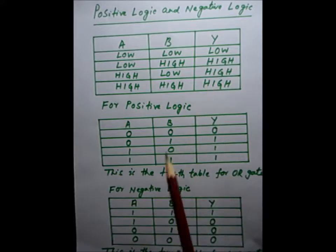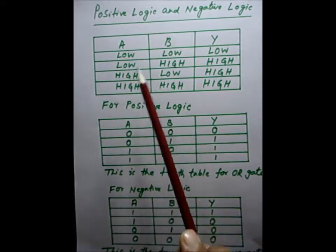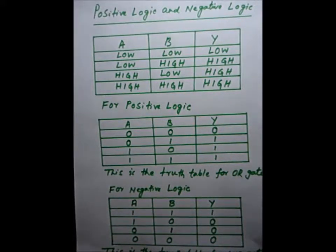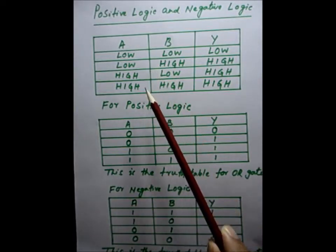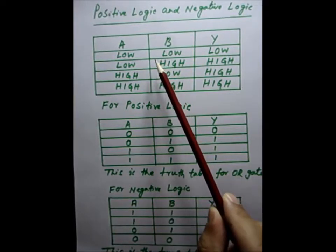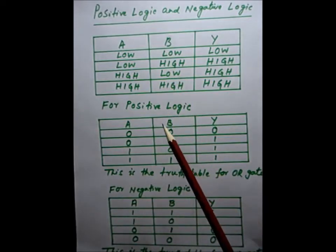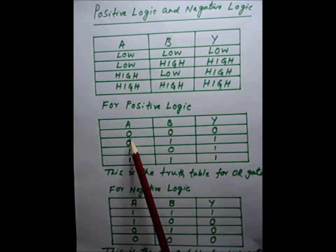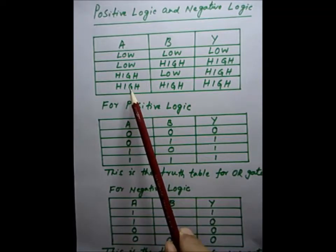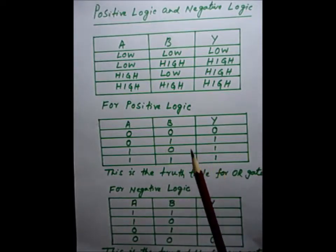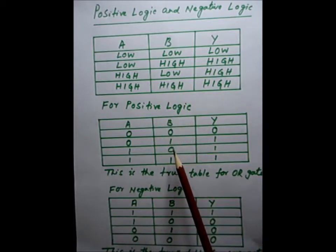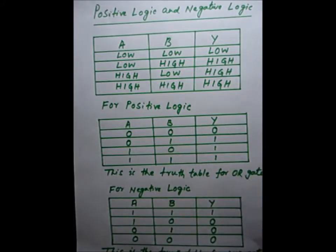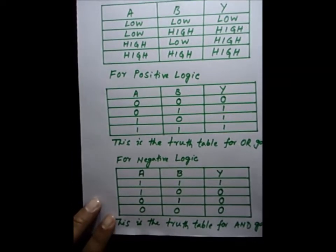Let us consider the table here where A and B are two inputs to a gate and Y is the output of the gate. If we apply positive logic to this table — that means 0 for low voltage and 1 for high voltage — the table is converted into a truth table. You can see the first row: low, low, low has been substituted as 0, 0, 0, and the last row high, high, high is substituted with 1, 1, 1. After substituting, this truth table corresponds to an OR gate.